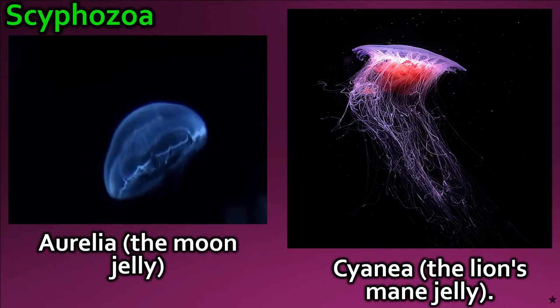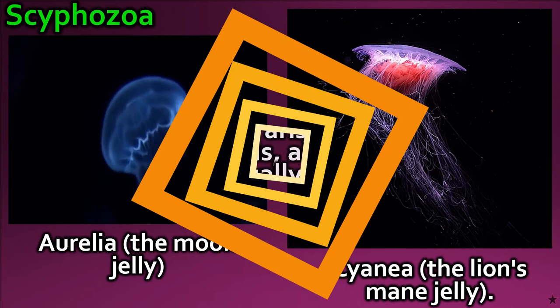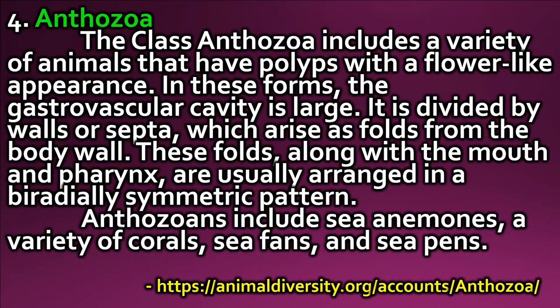Anthozoa includes sea anemones, a variety of corals, sea fans, and sea pens. Anthozoans have internal partitions called mesenteries, which arise as folds from the body wall. These folds, along with the mouth and pharynx, are usually arranged in a biradially symmetric pattern.